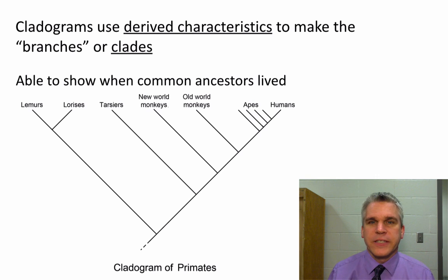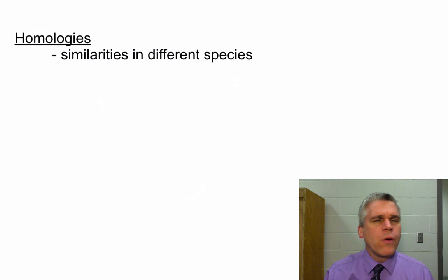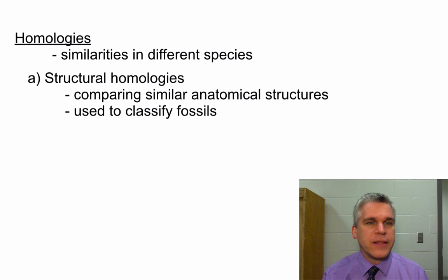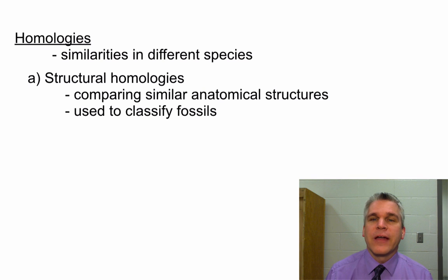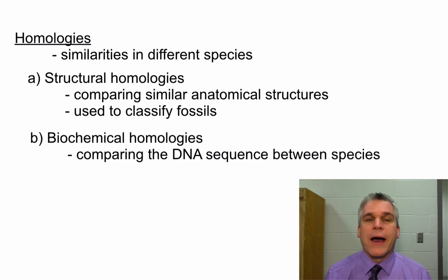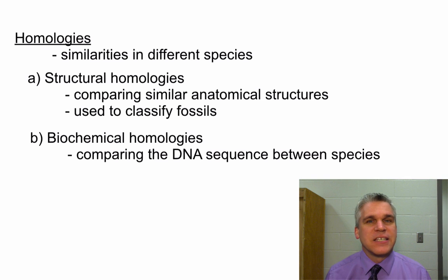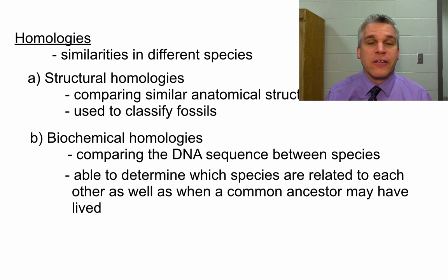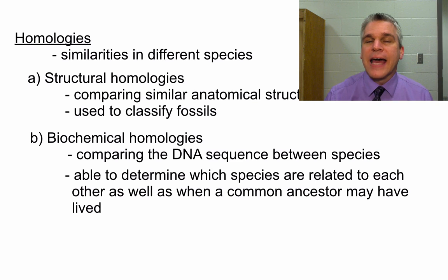We have to take a look at derived characteristics, and we get these from homologies — similarities in different species. There are two types: structural homologies, where scientists look at similar anatomical structures (which is really the only way to classify fossils), and for living organisms, we can also use biochemical homologies. Here we compare DNA sequences between species to see how closely related they are, and based on their DNA, this can tell us which species are more closely related, but also how long ago a common ancestor lived.